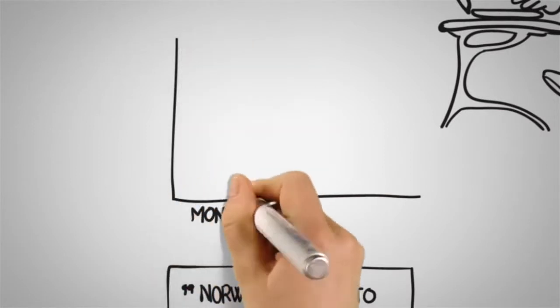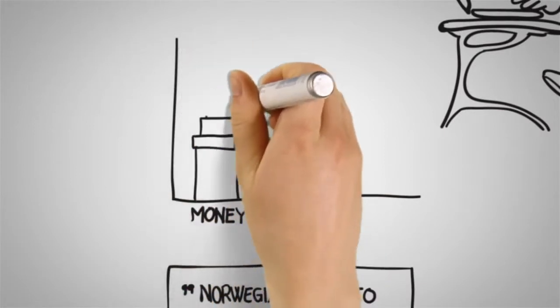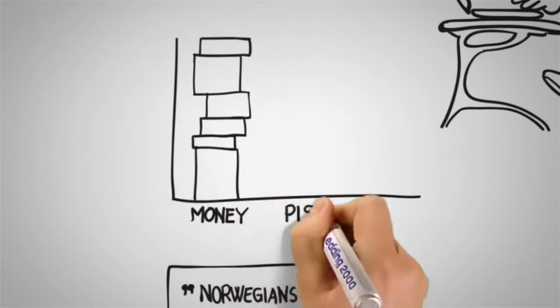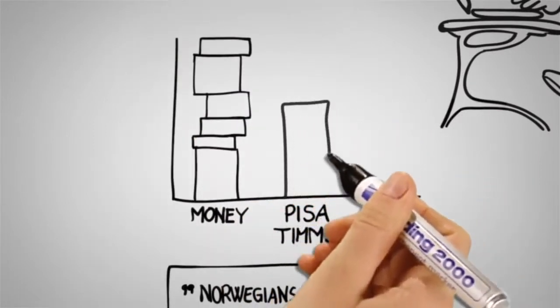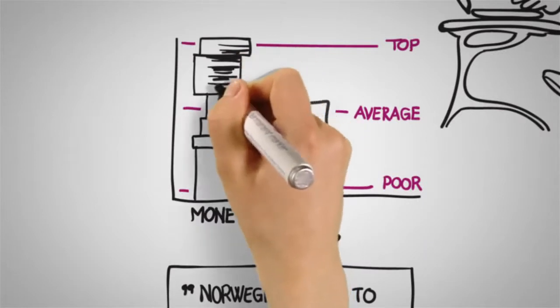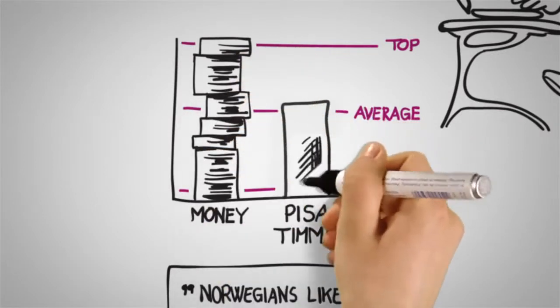the truth is that even though Norway spends more money on schools than most countries, Norwegian students score average on International PISA and TIMSS tests. Why is it like that? And what are the consequences?